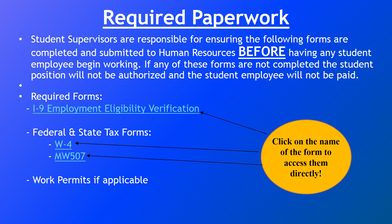The required forms are the I-9 employment eligibility verification, the W-4 federal tax form, and the Maryland MW-507 state tax form. These must be on file before any student begins working on campus.